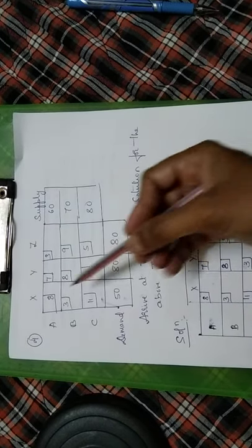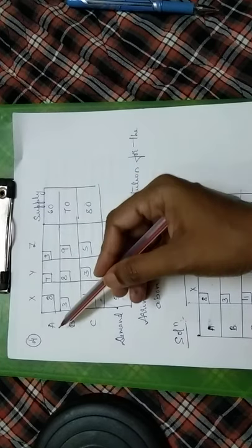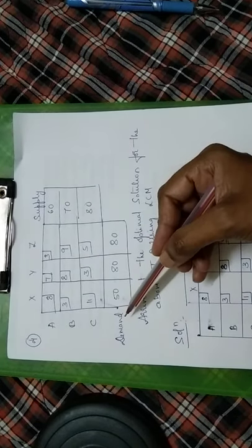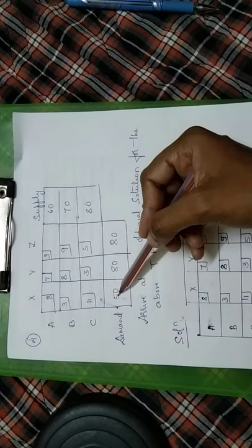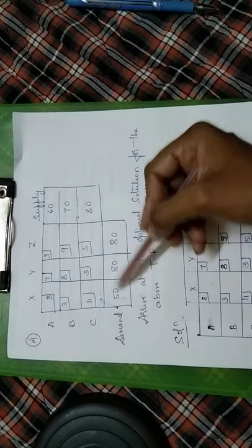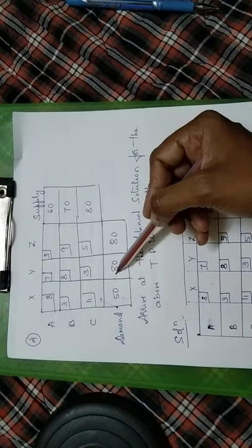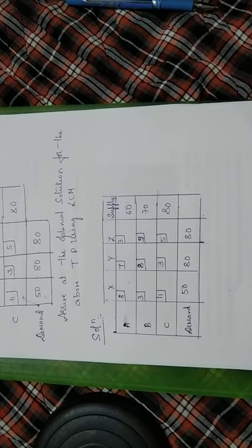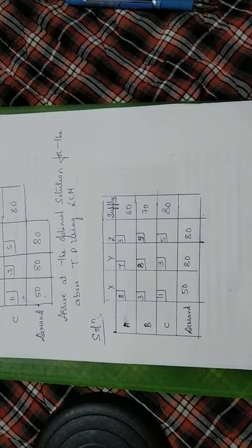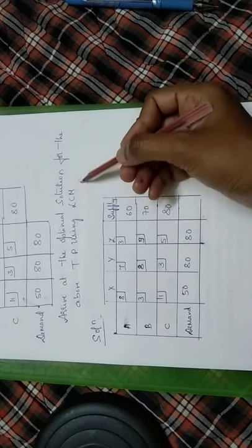Now I am with the fourth problem. Here you have a cost matrix XYZ, ABC, supply and demand factors. The supply and demand should be equal. Here it is 210, so supply and demand is balanced. Now let us work out the optimal solution using the LCM method.